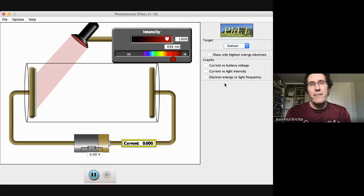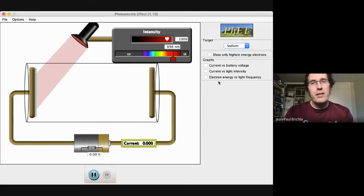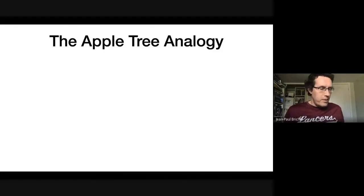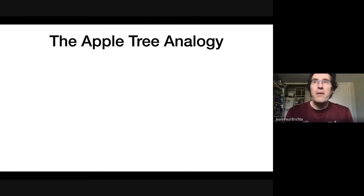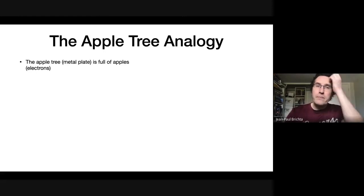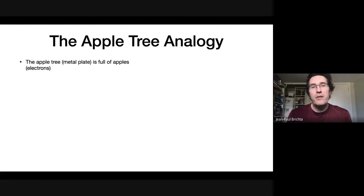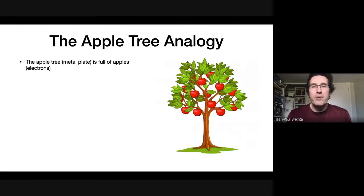That's the one I'm going to continue on with in the notes today. So let me try and explain what we were observing, the way it might have been explained with the wave model. I'm going to use an analogy of an apple tree. I want you to imagine that the apple tree is the metal plate, and the apple tree is full of apples, which represent the electrons.